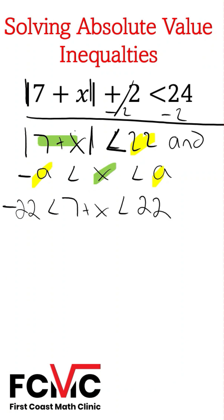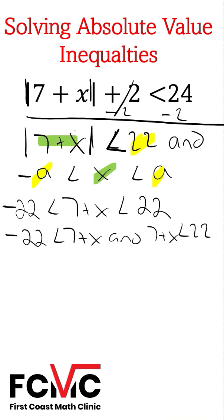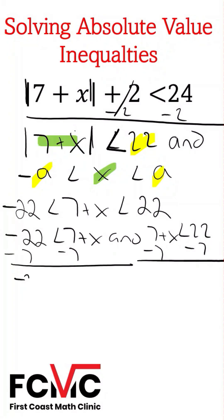Now let's rewrite this as two separate inequalities with the word and. Negative 22 is less than 7 plus x, and 7 plus x is less than 22. Now let's solve for x — subtract 7 from both sides. We get negative 29 is less than x, and x is less than 15.